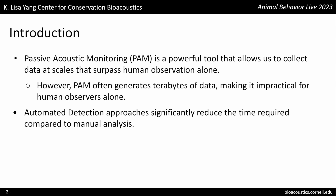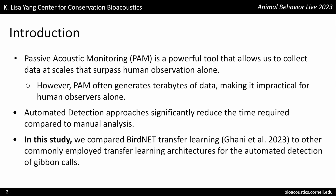Research has emerged on using transfer learning in automated detection approaches. Transfer learning is commonly defined as the reuse of a pre-trained model on a new dataset. In this study, we compared BirdNET transfer learning to other commonly employed transfer learning architectures for the automated detection of gibbon calls. The BirdNET transfer learning was done in Python while the rest of the analyses were done in the Torch4R ecosystem. It's important to note that BirdNET is trained using bird vocalizations while the other architectures use images from the ImageNet dataset.